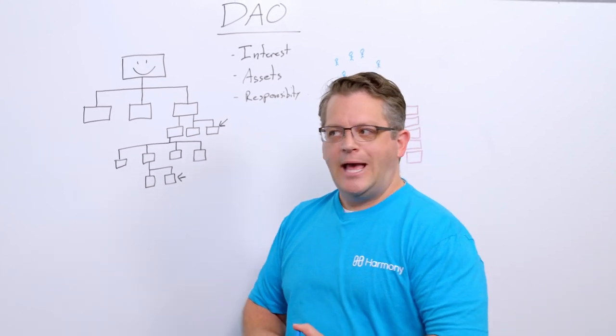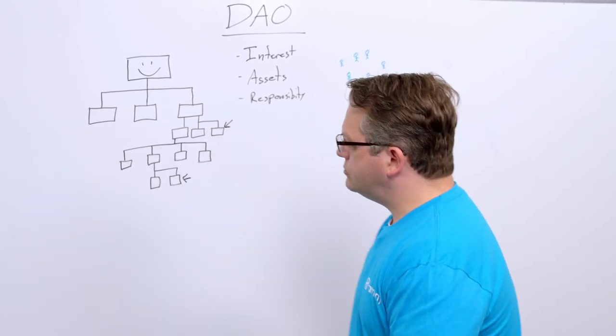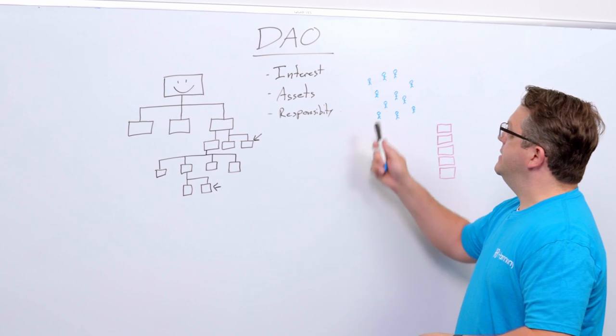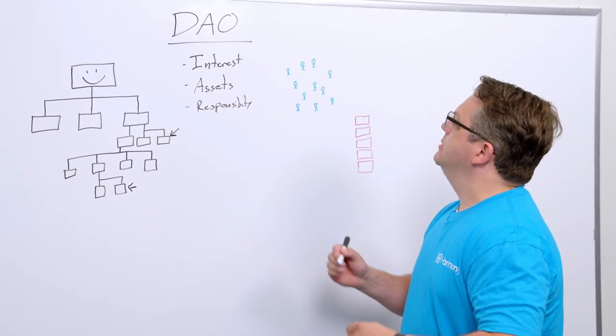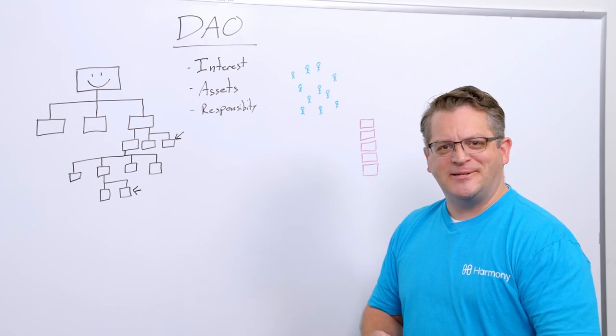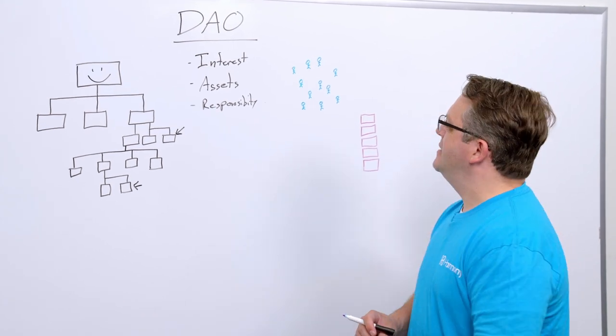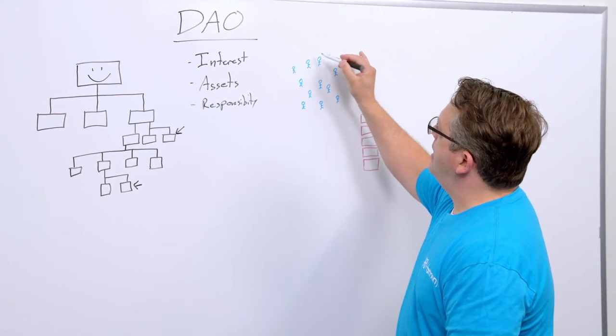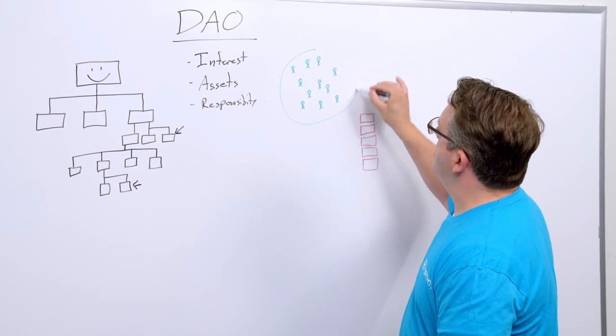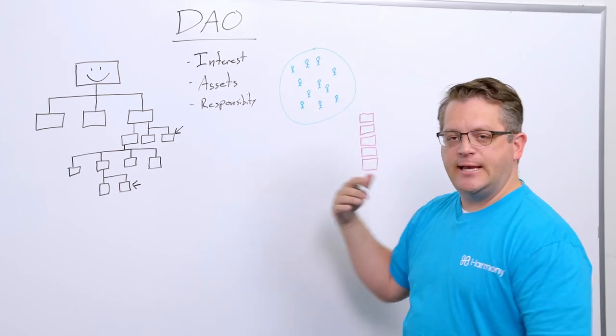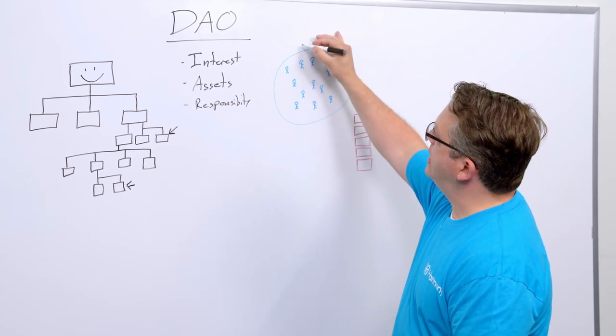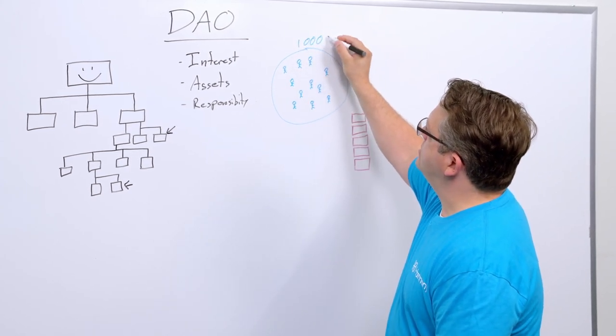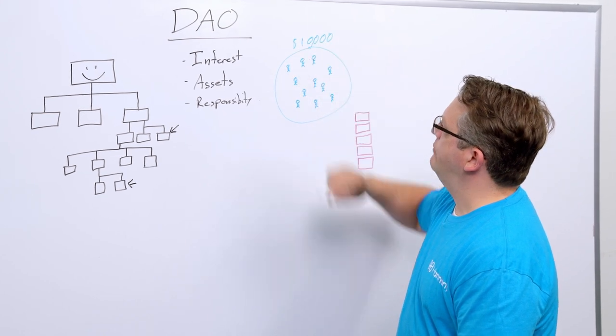But how does that work? How does it actually make a difference? So imagine this is you and a group of your friends, and you're all passionate about coding. You're all very passionate about blockchain and cryptocurrency. So you all get together and you form a DAO. And to kickstart the DAO, everybody puts in $10. So let's say that our treasury ends up being $10,000, just roughly.